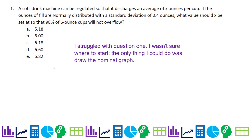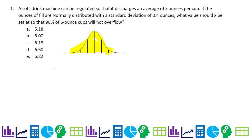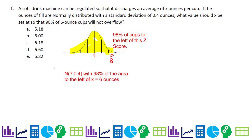Starting with question one, I drew the normal distribution. We know the standard deviation is 0.4 ounces, but we don't know the mean — we're trying to figure it out. We want 98% of cups to not overflow. I'm shading to the left because I want 98% to be below six ounces. Only 2% are allowed to go over six ounces. So six ounces is marked on the distribution, and we want 98% of cups to the left of that Z-score.